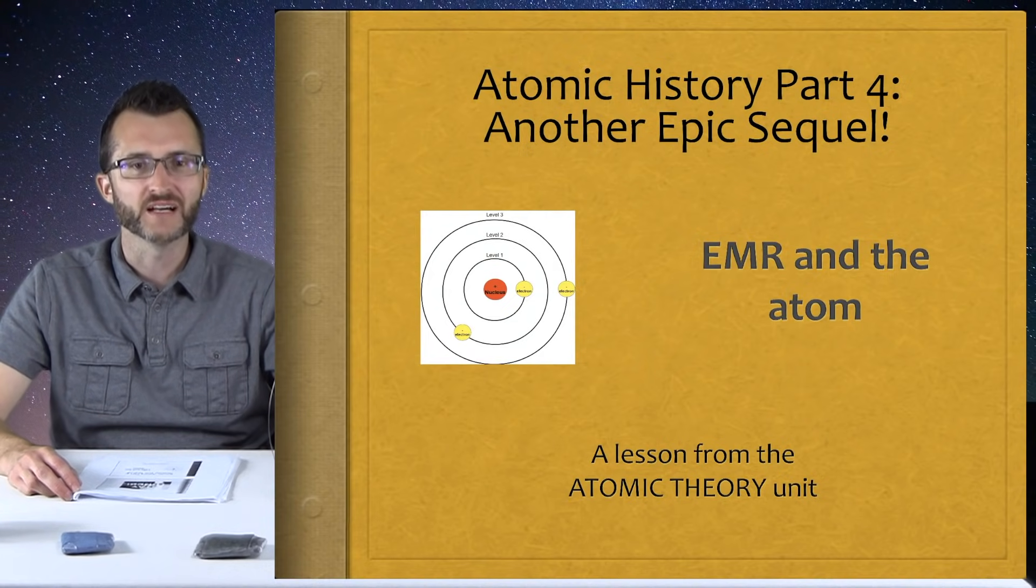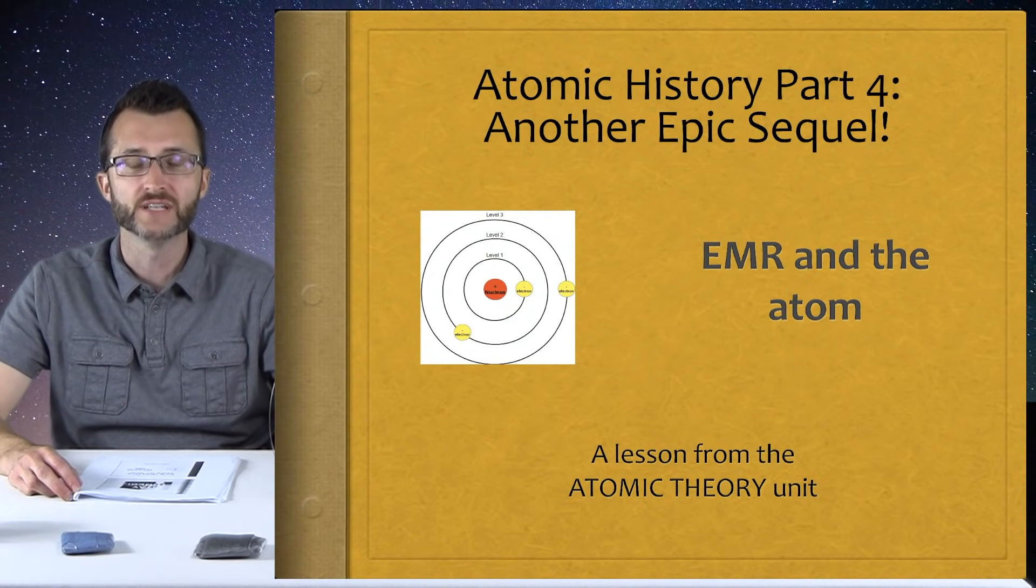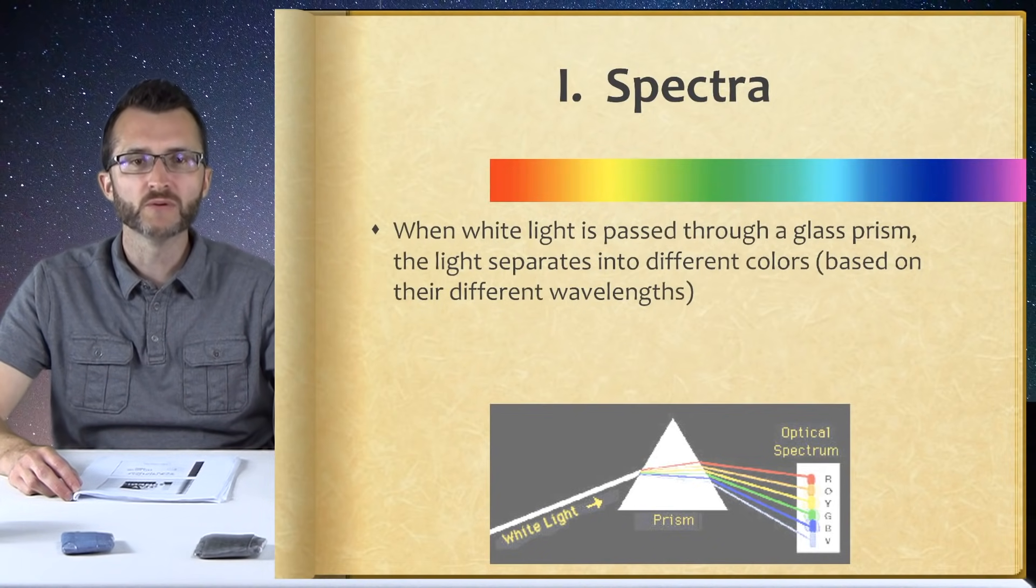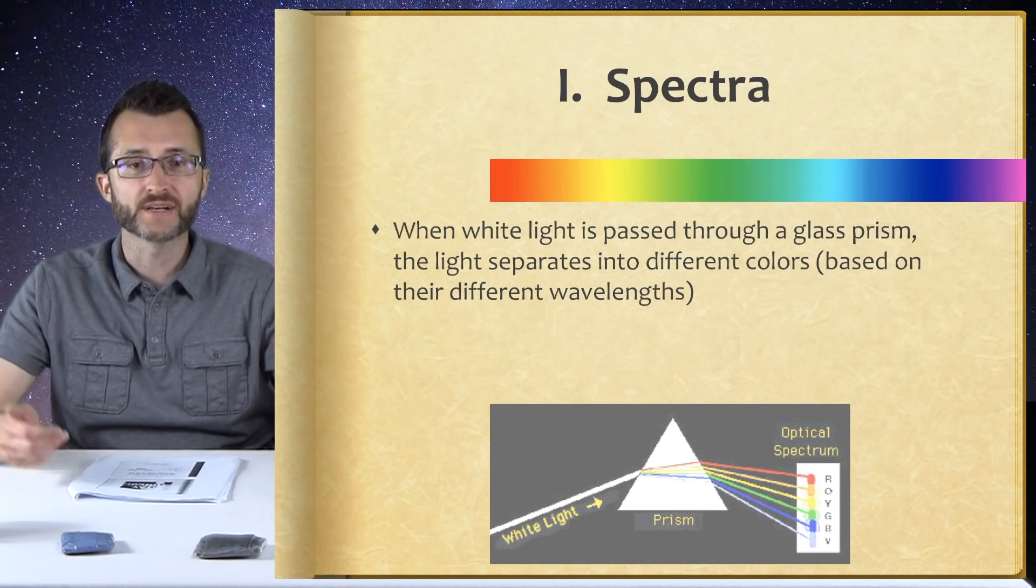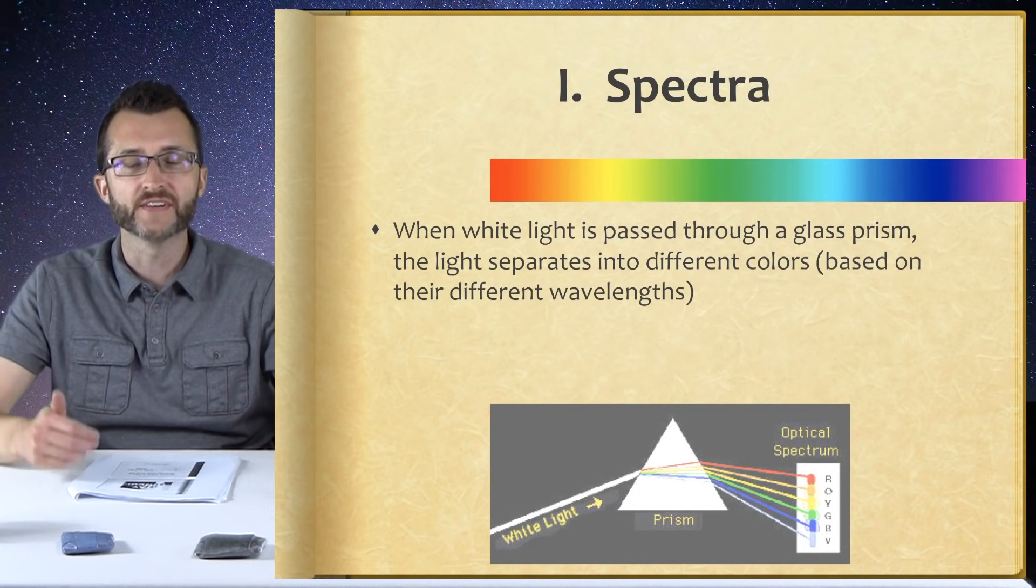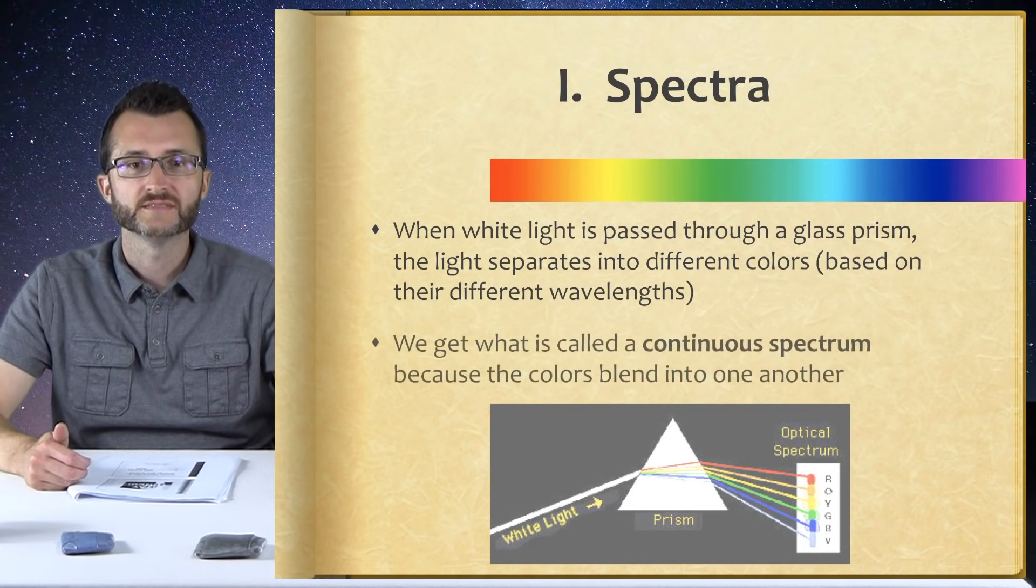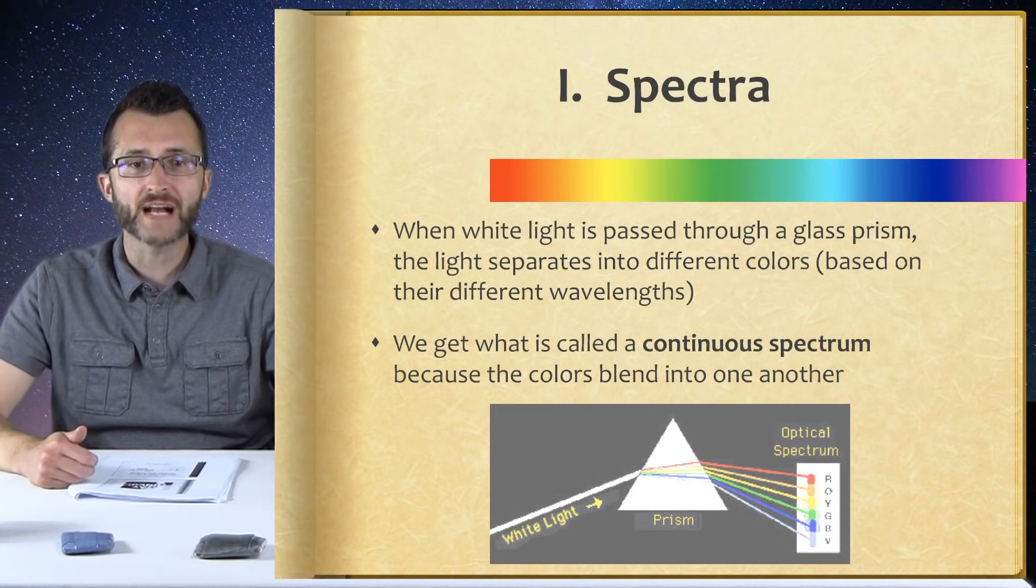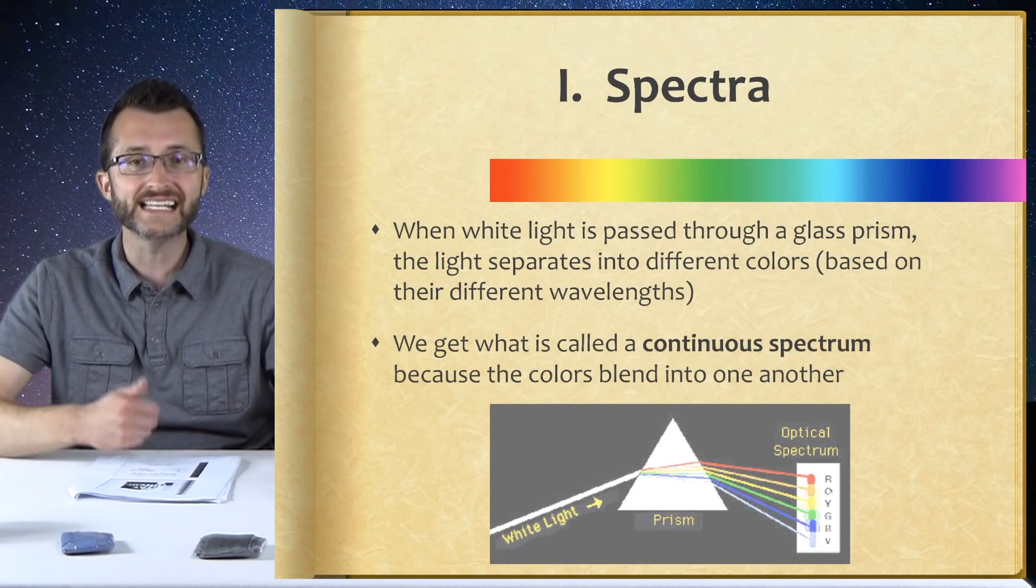Atomic history part 4. Another epic sequel. EMR and the atom. When white light is passed through a glass prism, the light separates into different colors based on their different wavelengths. Like a rainbow? We get what is called a continuous spectrum because the colors blend into one another.